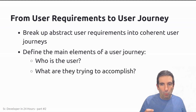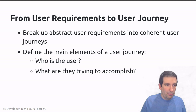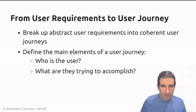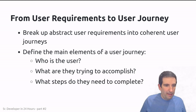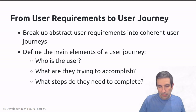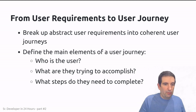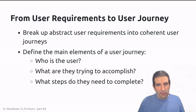Second: what are they trying to accomplish? Whenever the user is using our application, they have a goal in mind — so we want to describe exactly what they're trying to accomplish. And finally, what steps do they need to complete to achieve this goal? A user journey, like the name says, involves several steps, and each step gets the user closer to that particular goal they had in mind.